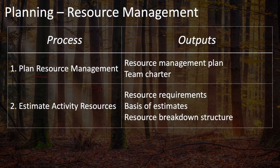There are two project management processes in the planning process group and the resource management knowledge area. These are plan resource management, which has as its primary outputs the resource management plan and the team charter, and the estimate activity resources process, which has as its main outputs the resource requirements, the basis of estimates, and the resource breakdown structure.